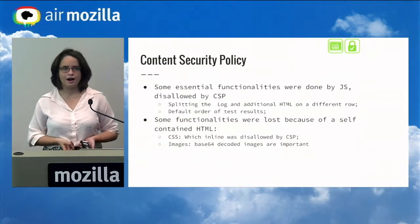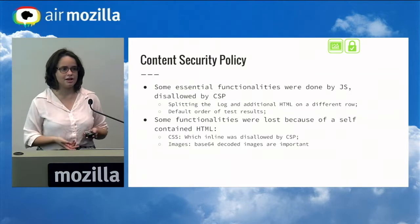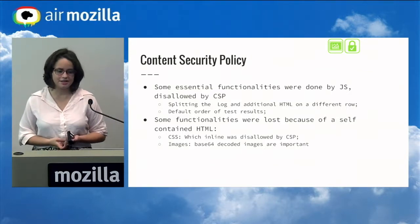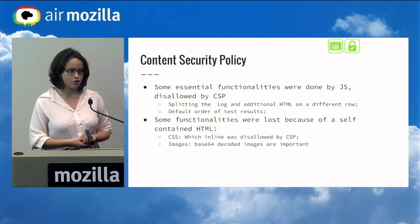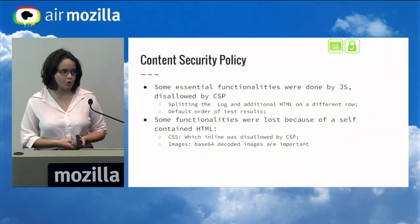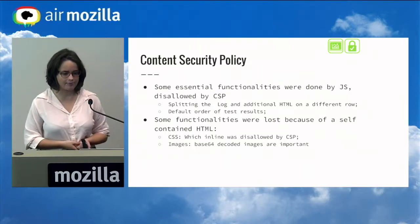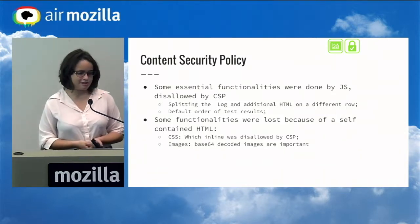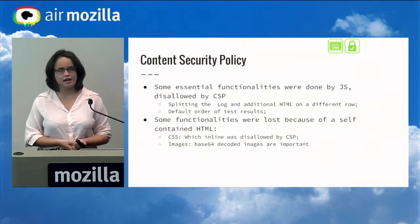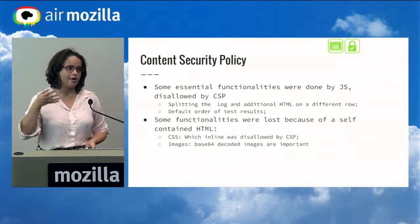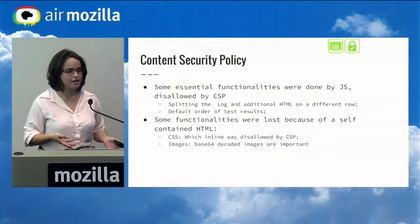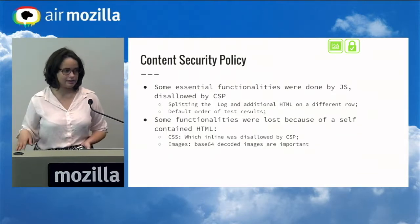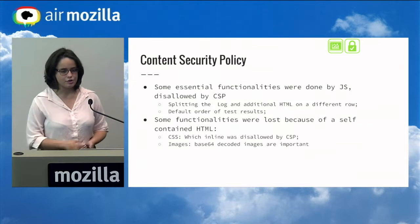Some functionalities were lost because of the self-contained HTML. When pytest-html was created, they decided it would be a single file because it would be easier to share results, but that was breaking some CSP rules — the CSS was inline because there was only one file for everything. The solution was to break the CSS into a separate file and then link it, and then the CSS started to work again.